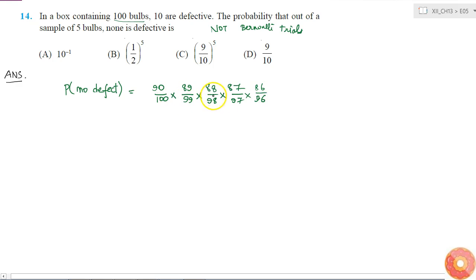This is the actual probability that none of the 5 bulbs is defective. Because as you keep taking out the bulbs, the denominator also keeps decreasing. And so therefore you cannot consider this.